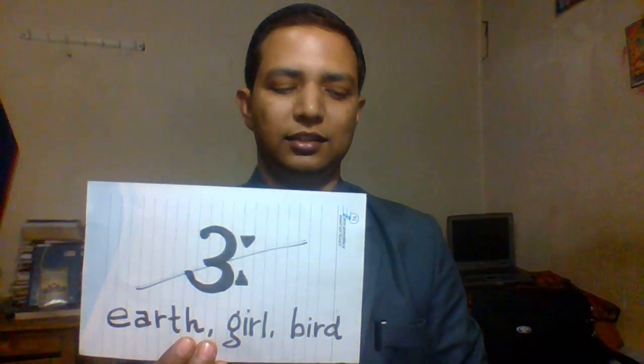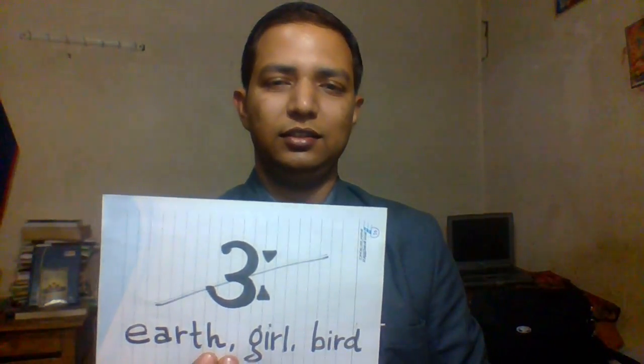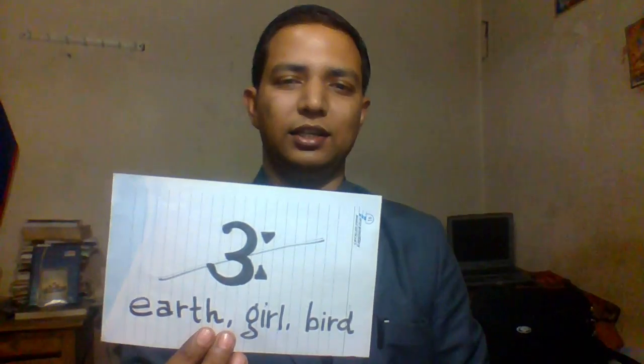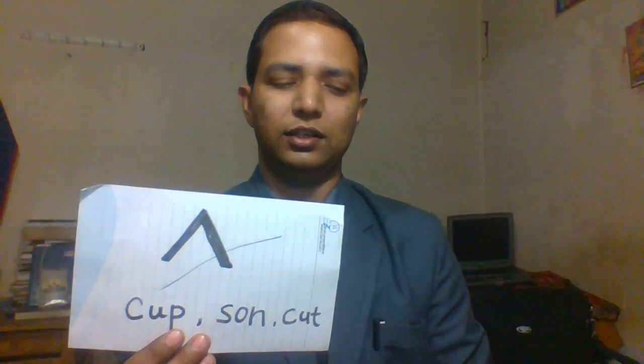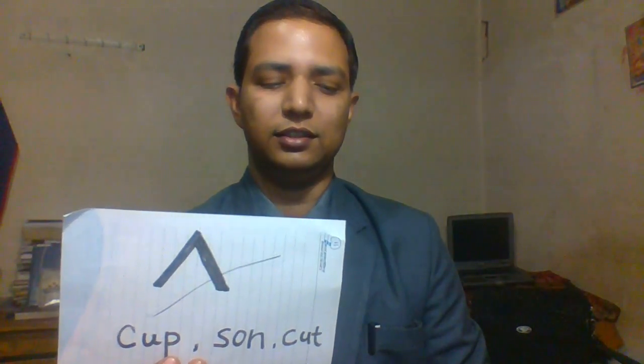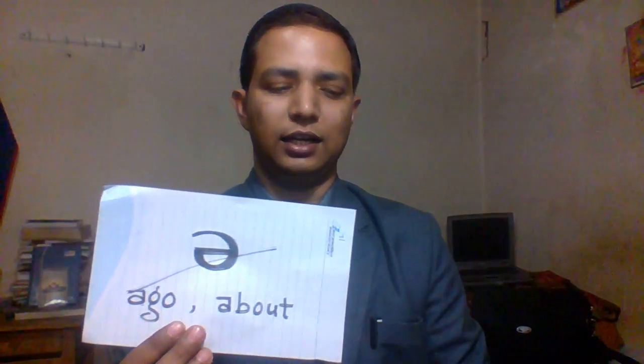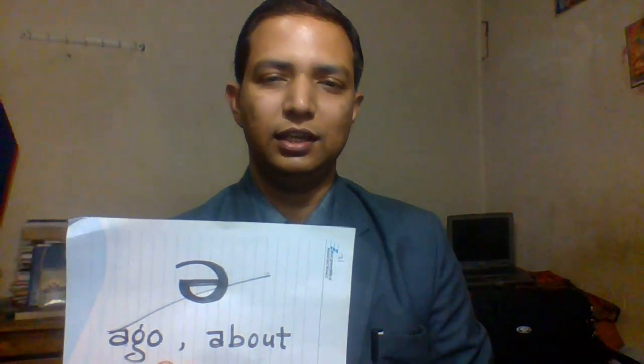Next is the ER sound, as in earth, girl, and bird. Another vowel sound follows. Next is the short U sound, as in cup, sun, and cut. Next is the schwa — a normal unstressed A — as in ago, about, and above.